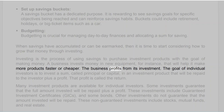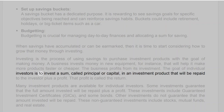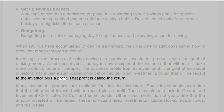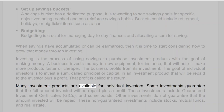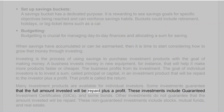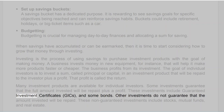A business invests money in new equipment, for instance, that will help it make more products faster or cheaper, and the business profits from its investment. The goal of individual investors is to invest a sum — called principal or capital — in an investment product that will be repaid to the investor plus a profit. That profit is called the return. Some investments guarantee that the full amount invested will be repaid plus a profit, including guaranteed investment certificates (GICs) and some bonds.